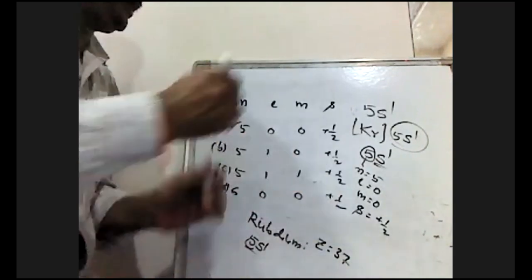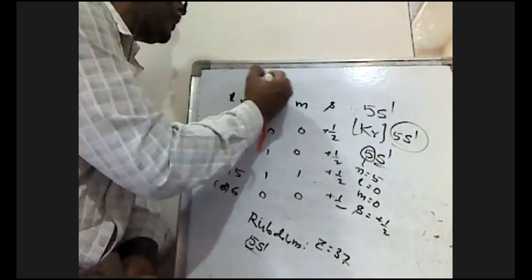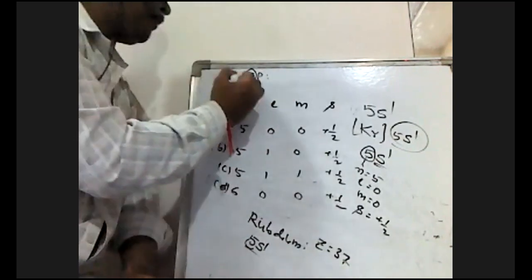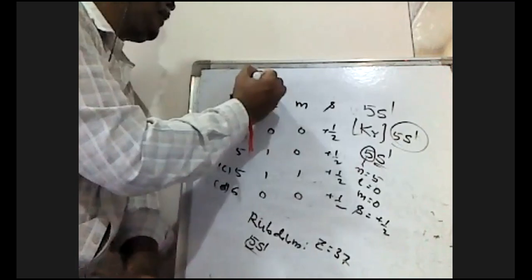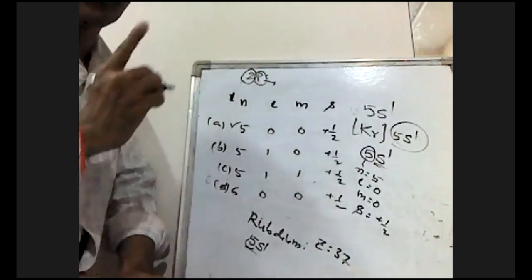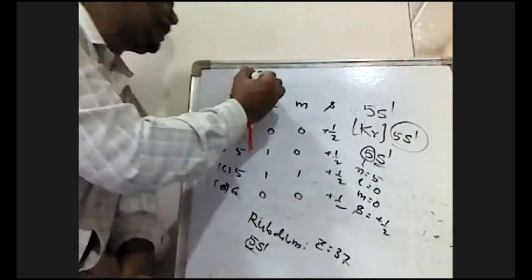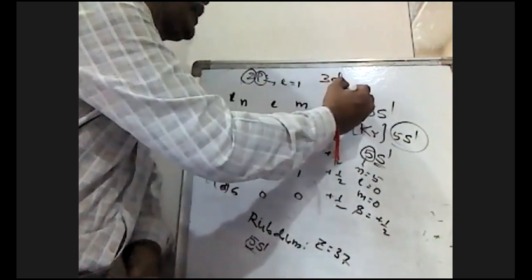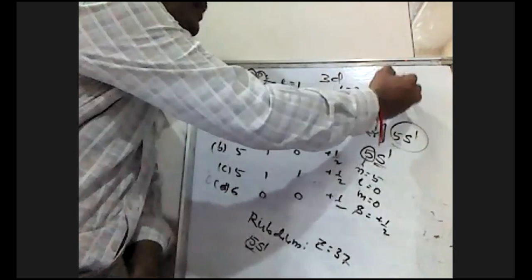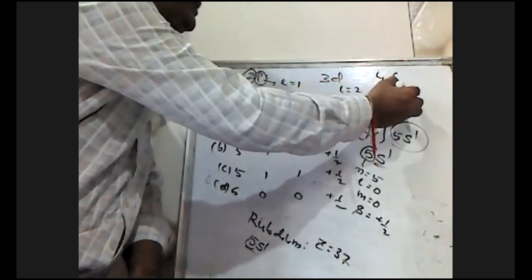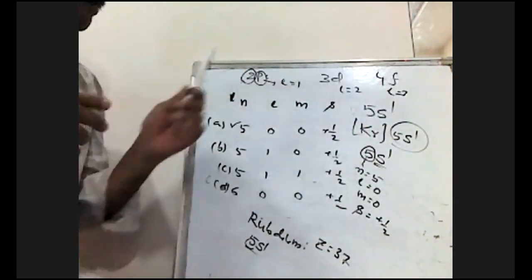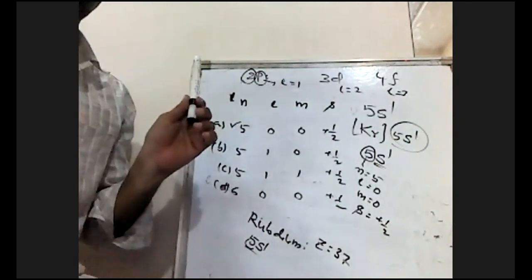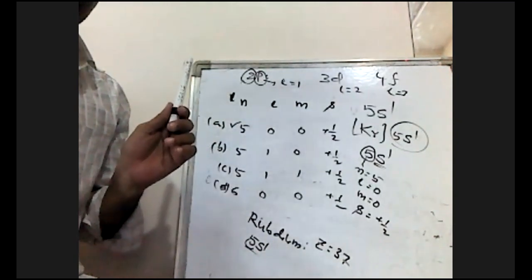In any orbital notation, for example 2p, the number 2 corresponds to the principal quantum number n, and the letter p tells us the azimuthal quantum number l. For a p orbital l = 1, for a d orbital l = 2, and for an f orbital l = 3. By reading the orbital notation itself, we can identify both n and l.